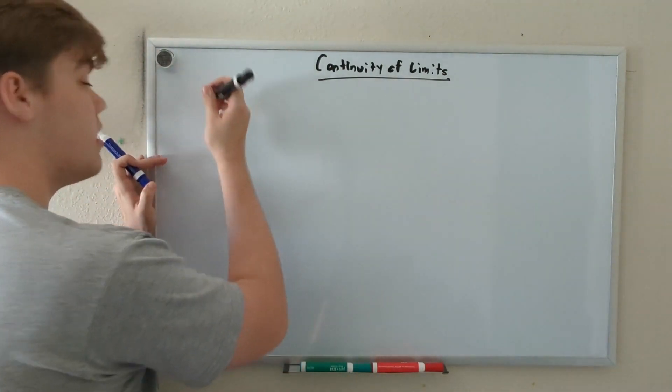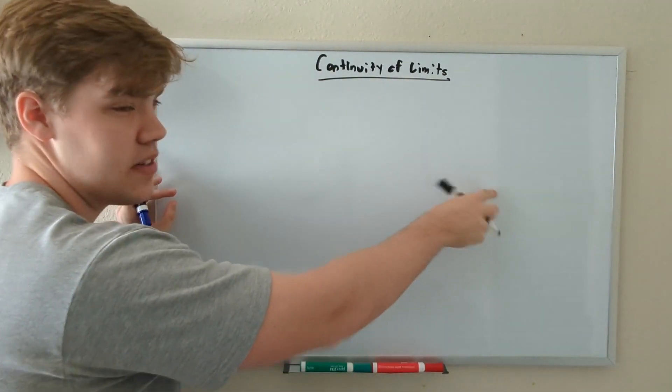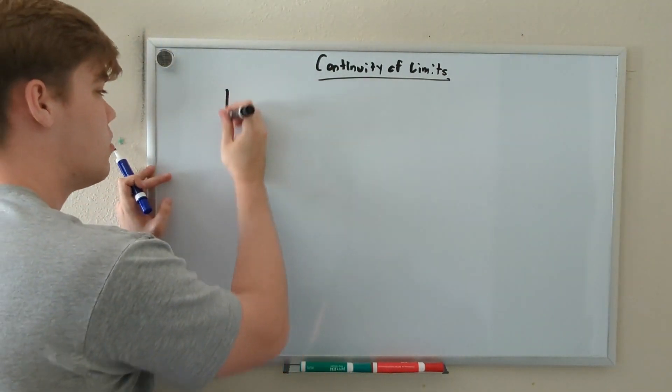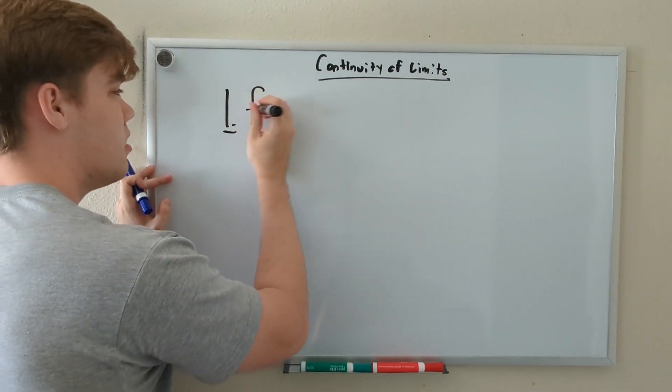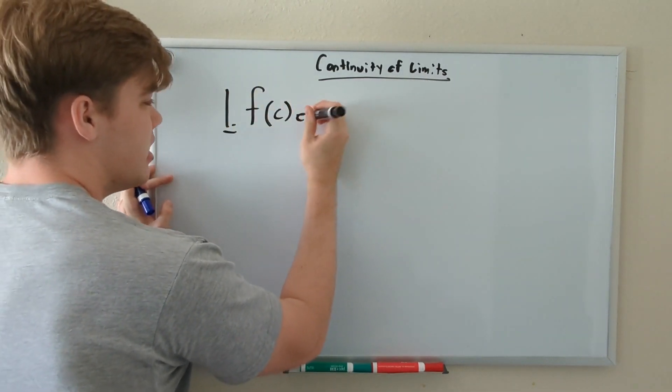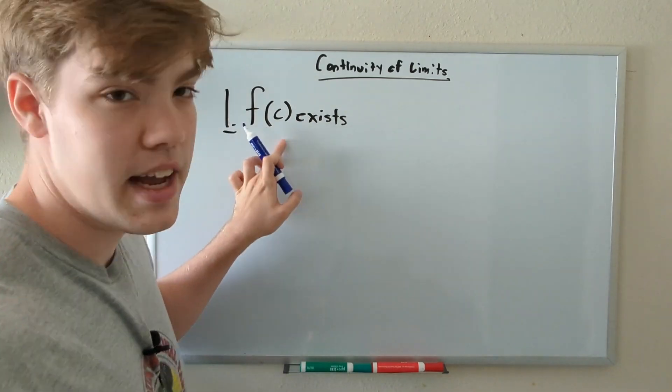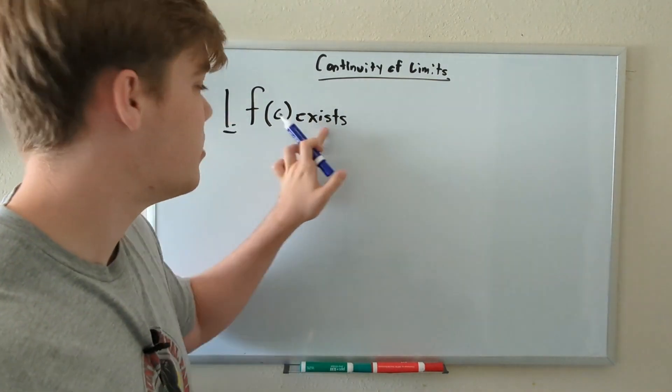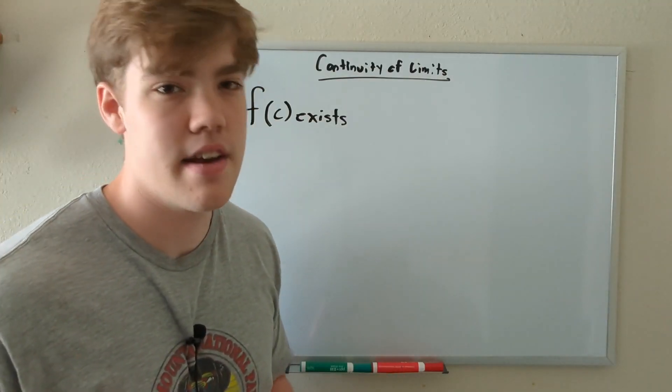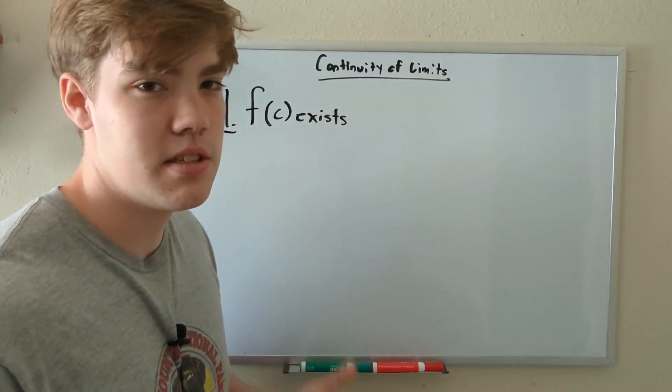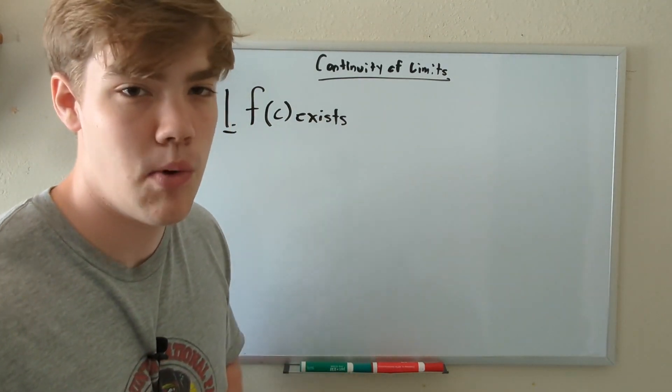Rule number one, and I'll have these written down so when we're doing examples over here, you can still refer back to these. Rule number one: F at point C exists. This states that the function at any point that we find has to exist. So there can't be a hole there. It can't not reach that. Whatever point we're at, the function has to exist there. That's the idea with rule number one.